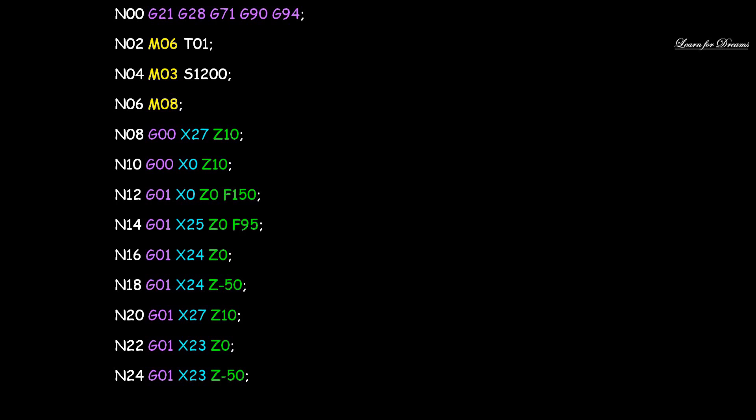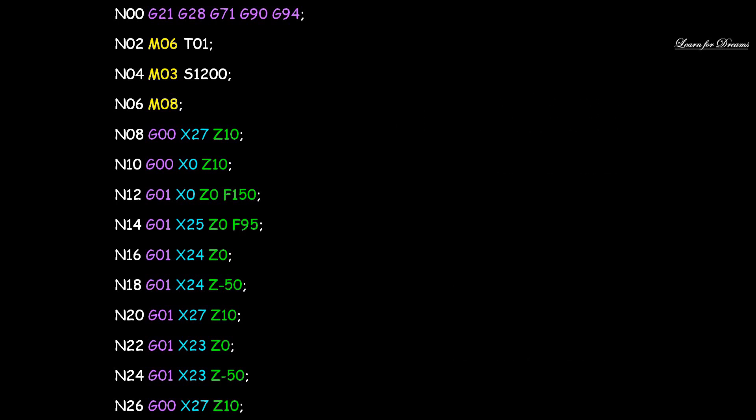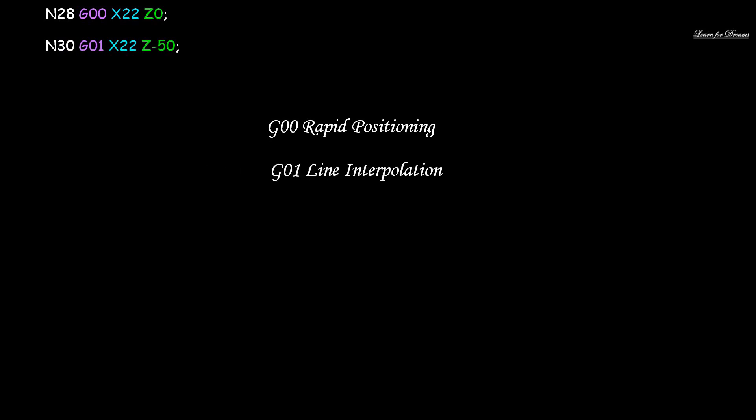Then we move to the next layer. N22: G01, X23, Z0 - we cut that layer. N24: G01, X23, Z-50. Again, we go to the home position. This process continues until we get the final design as per the requirement. You just need to change the Z and X values for each subsequent layer.